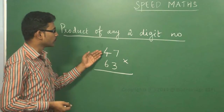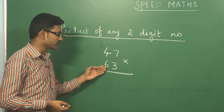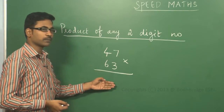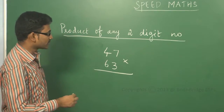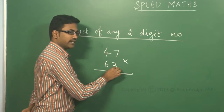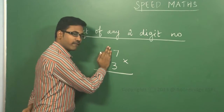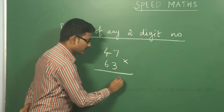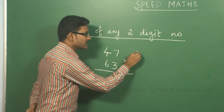If the two-digit number is 47 and you want to multiply it with 63, here is the procedure. The first step is multiplying the first column: 7 into 3, which gives the answer 21, carry 2.